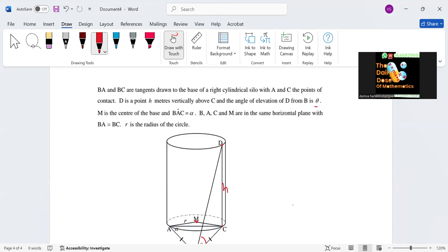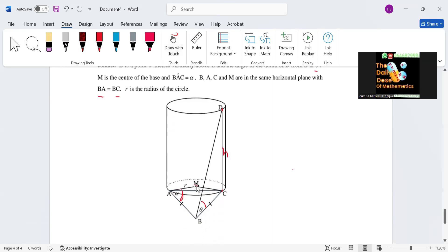And then we have this angle here which is BAC, they say this one here is alpha. BAC and M are on the same horizontal plane, so BA, C, and M are all on the same horizontal plane. They say BA and BC are equal to r.